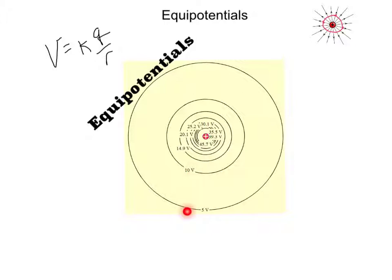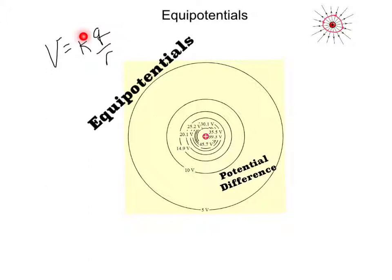Take a look at the space between these equipotentials. The space between each equipotential represents the change in electric potential, or the potential difference. In this drawing, the potential difference is the same for each space — it's roughly 5 volts change between each circle. Kind of like how the spaces on a contour map represent the same change in elevation. The term potential difference refers to a change in electric potential. As we move further away from our positive source charge, the electric potential decreases, which fits with our equation for electric potential around a source charge. The electric potential is inversely proportional to the distance away from that charge.